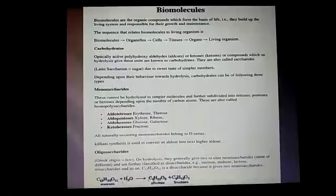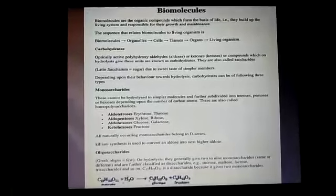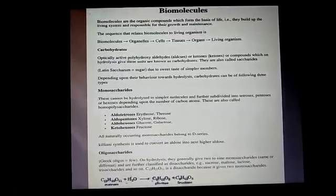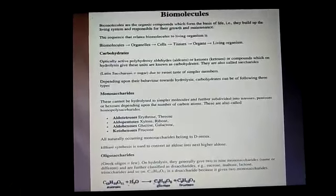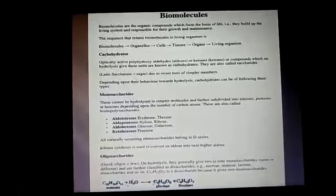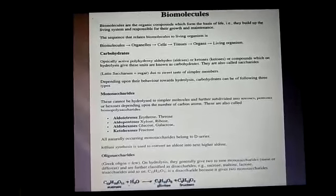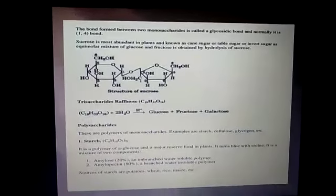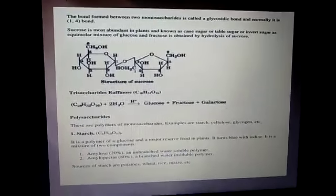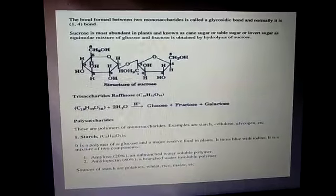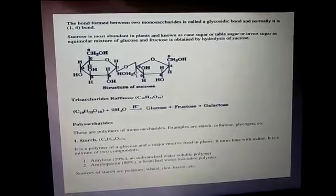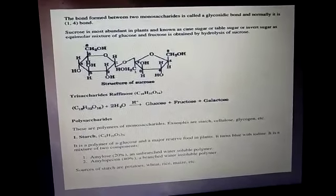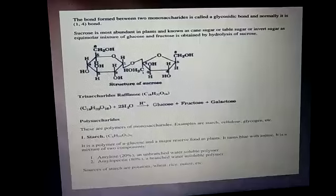Similarly, if we have 3 carbon atoms and a ketone group, we call them ketotriose; 4 carbon atoms and a ketone group — ketotetrose; 5 carbon atoms and a ketone group — ketopentose, etc. The monosaccharides contain a large number of monosaccharide units joined together by glycoside linkage. These are the most commonly encountered carbohydrates in nature, mainly acting as food storage or structural material.